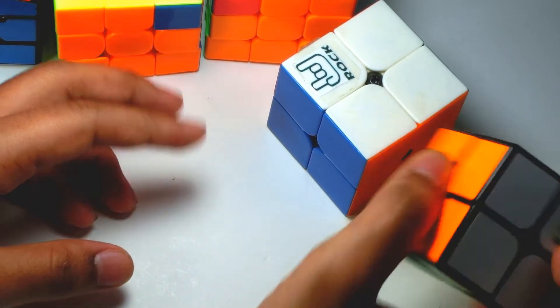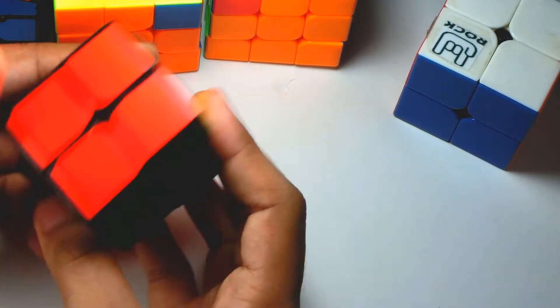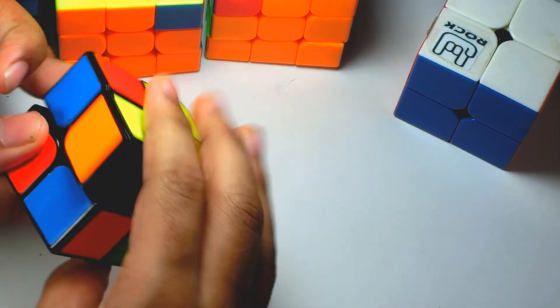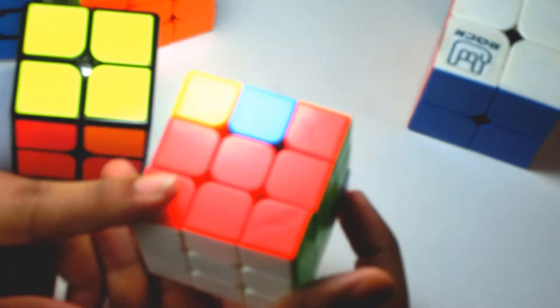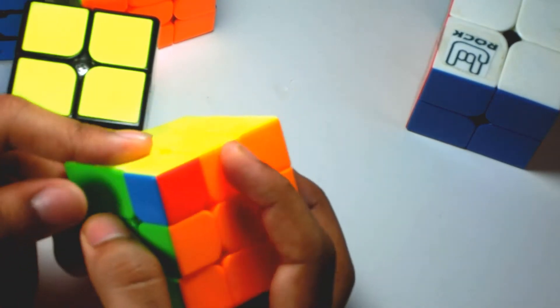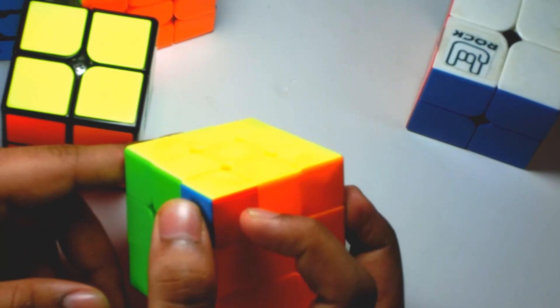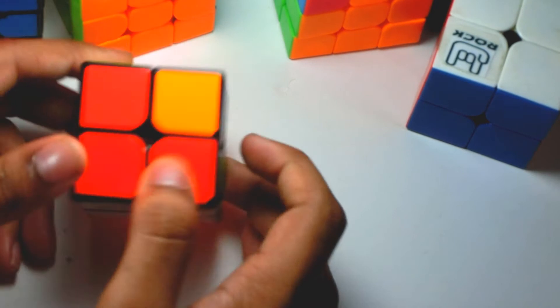Okay, now we're going to go to the last case. It's known as the Y permutation. Again, this is super similar to the case on the 3x3. On 3x3 it looks something like this. There's no headlights, it's just two bars and the opposite corner over here. Same thing over here.